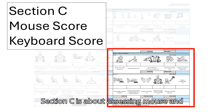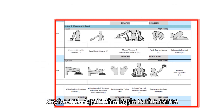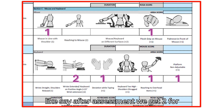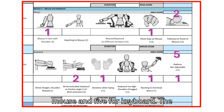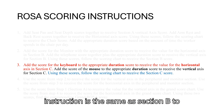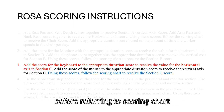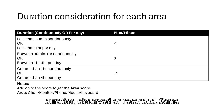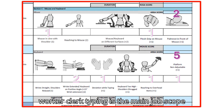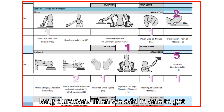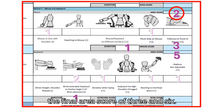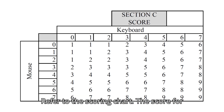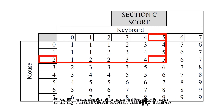Section C assesses mouse and keyboard. After assessment, we get a score of 2 for the mouse and 5 for the keyboard. The same duration adjustment logic as Section B applies. Since the worker is a clerk whose main job is typing, the duration is long, so we add 1 to each area score, getting final area scores of 3 for mouse and 6 for keyboard. Referring to the scoring chart, the Section C score is 5.